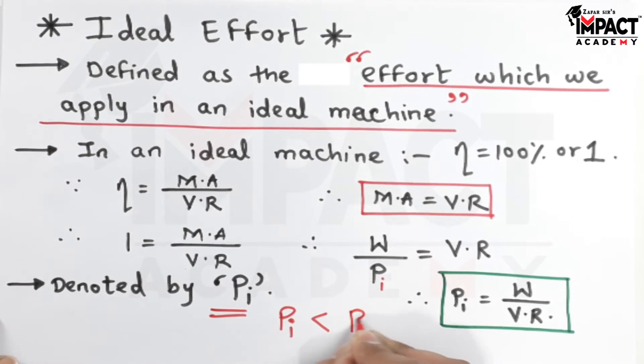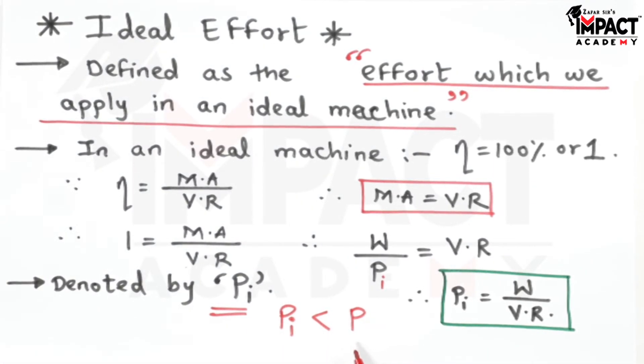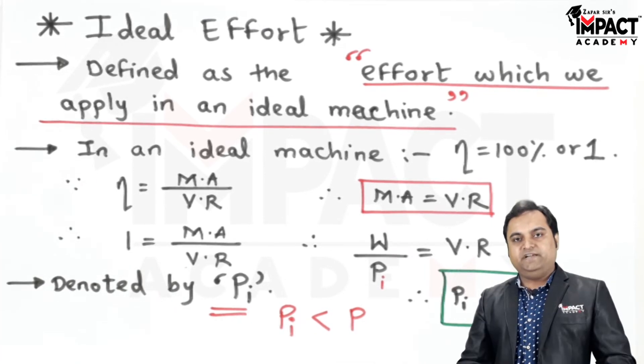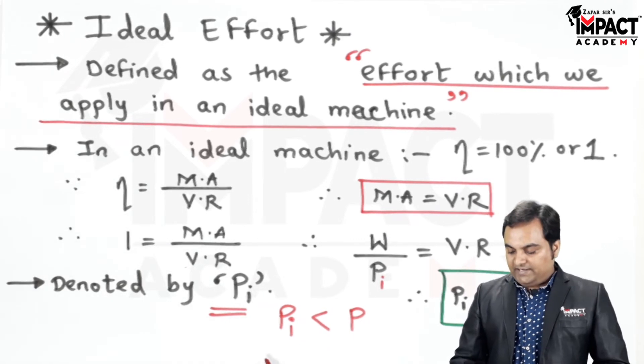than P, which is the actual effort. This actual effort P would be there in case of actual machines in which friction is present, whereas Pi is the ideal effort in machines when friction is absent, also called the ideal effort.